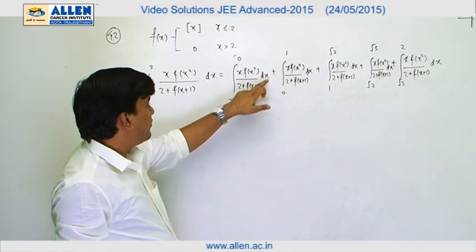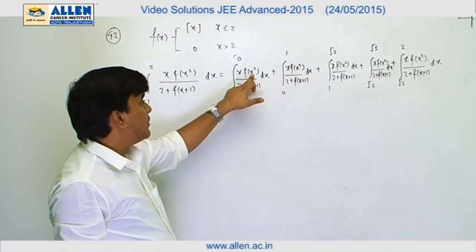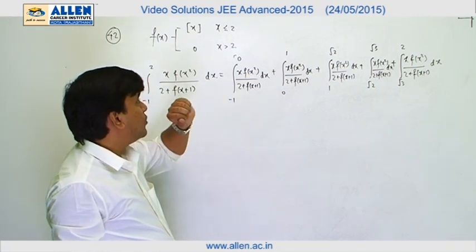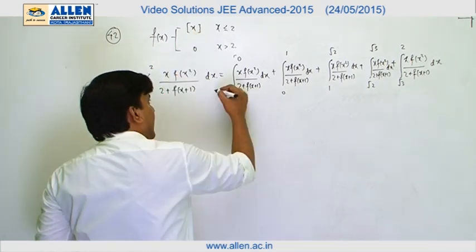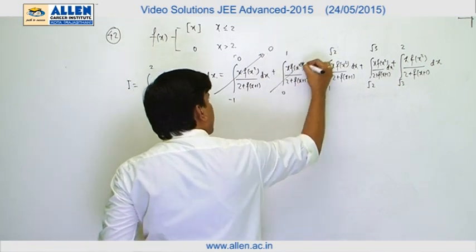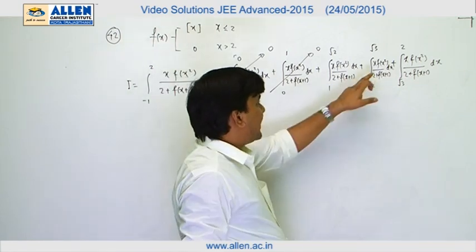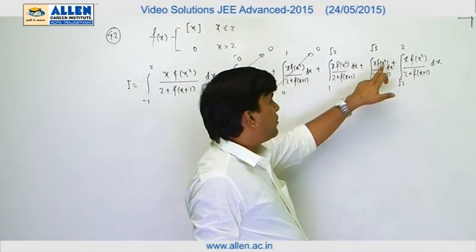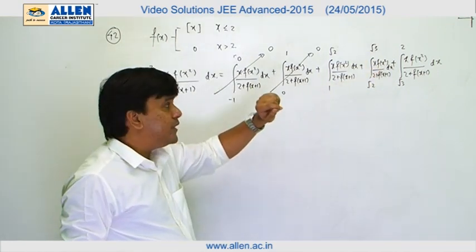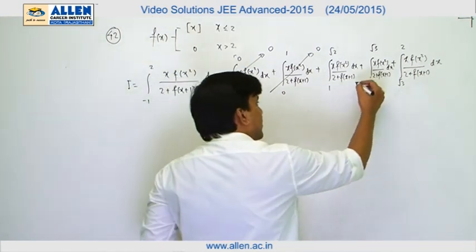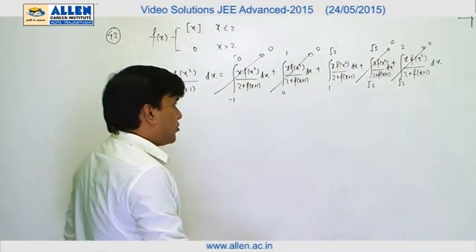For the interval from −1 to 0, x² varies between 0 to 1, so the argument of f varies between 0 and 1. For that range f = 0, so those integrals are 0. Similarly, for √2 to √3, x² varies between 2 and 3, the argument of f is between 2 and 3, so f = 0 there too. With similar logic, the interval √3 to 2 is also 0, so we are left with only the integral from 1 to √2.